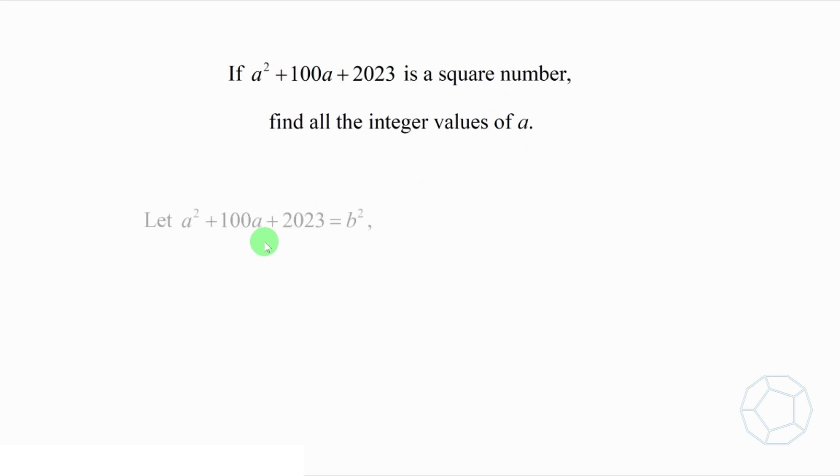The first step is quite obvious. We let a^2 + 100a + 2023 equals to b^2, where b is an integer.